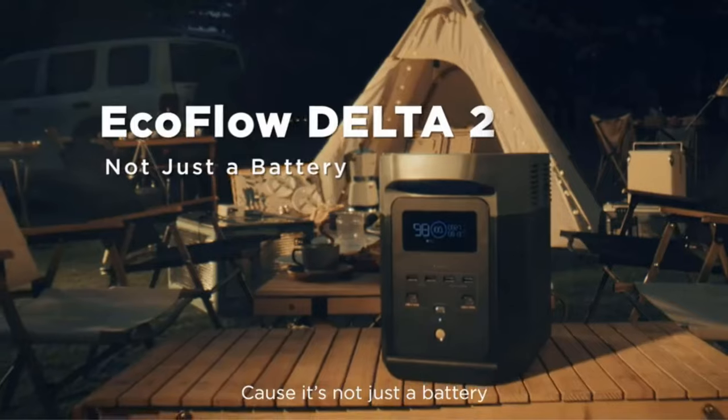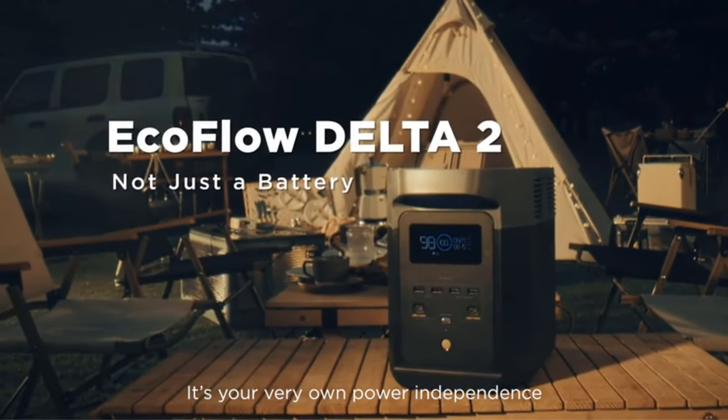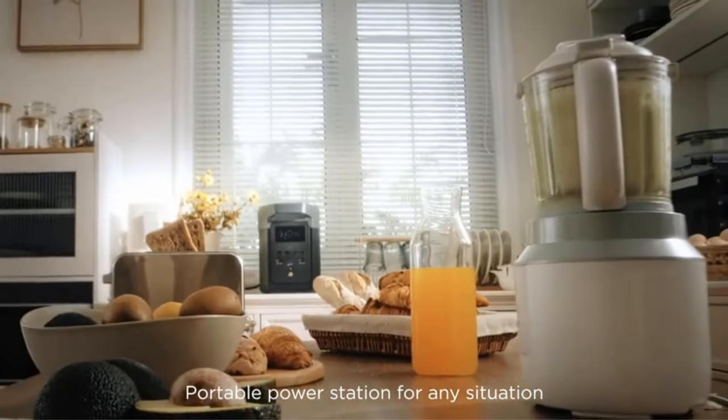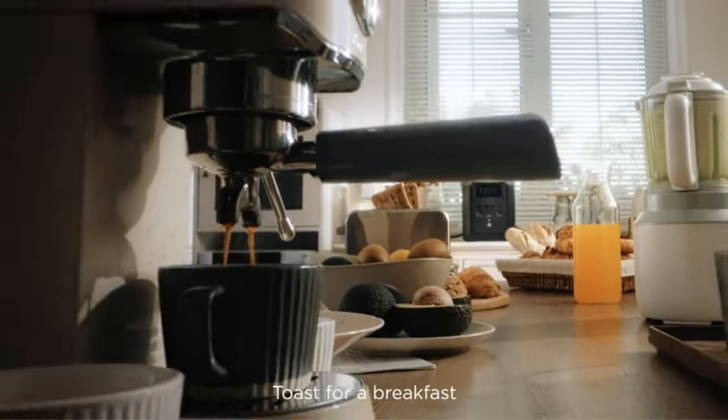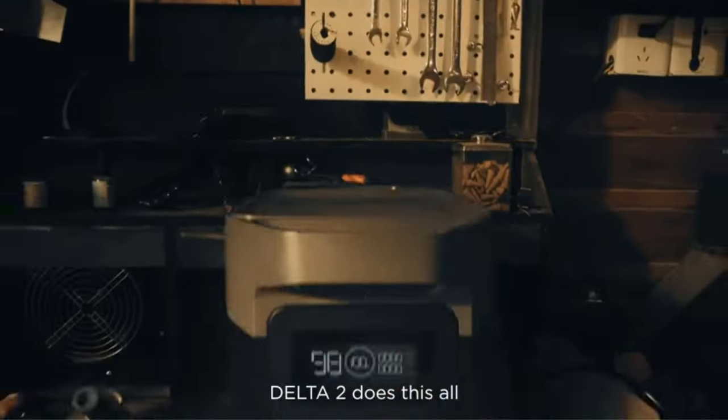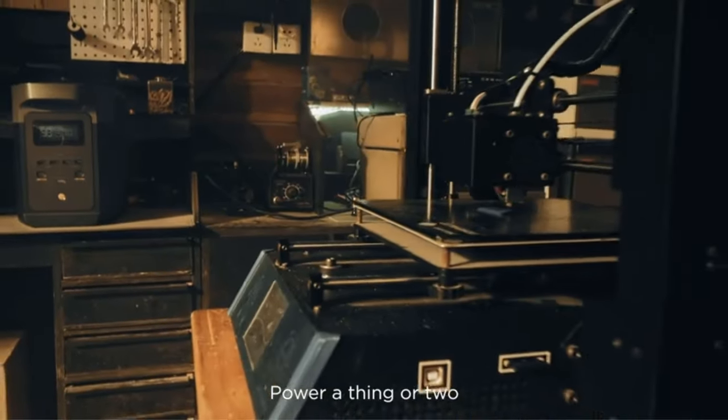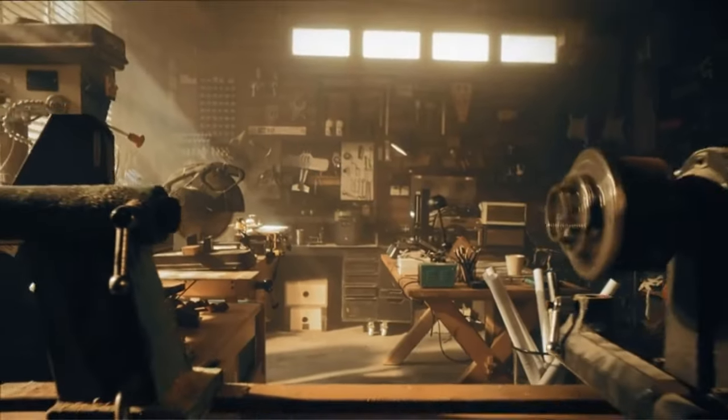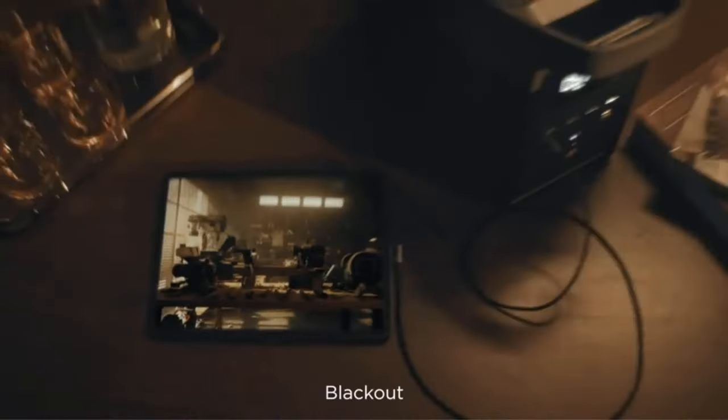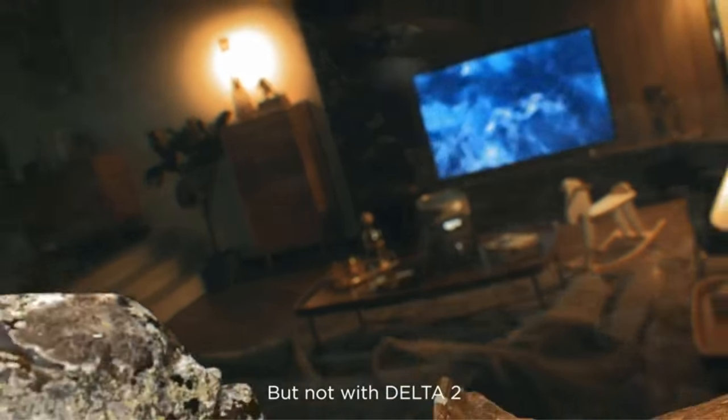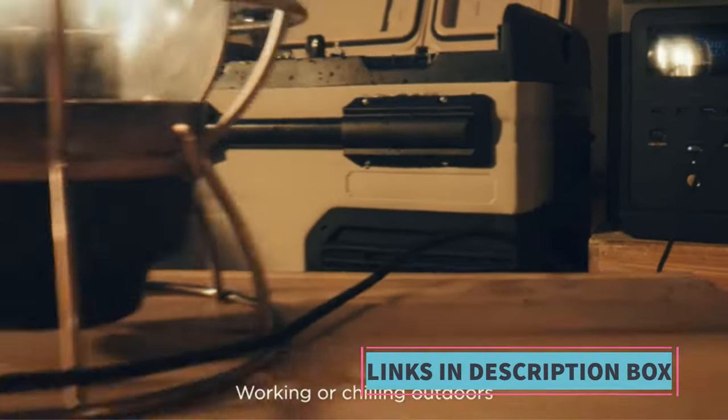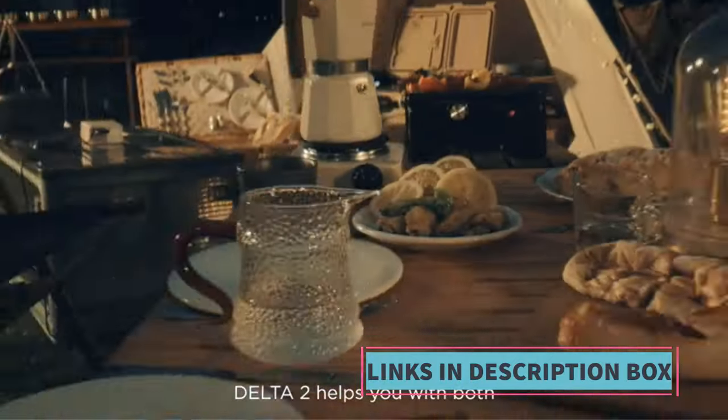One of the standout features of the DELTA2 is its fast-charging capability, which enables users to recharge the battery quickly, ensuring minimal downtime between uses. This is especially valuable during emergencies or off-grid situations where access to traditional power sources may be limited. With its portable design, the DELTA2 offers convenience and versatility, making it an ideal solution for various applications, including powering essential devices during power outages, providing electricity for camping trips, and serving as a reliable power source for RV adventures.